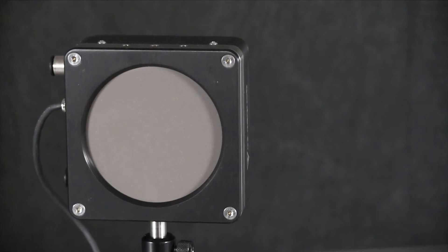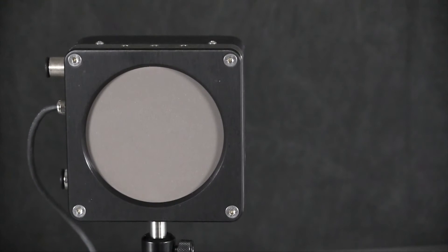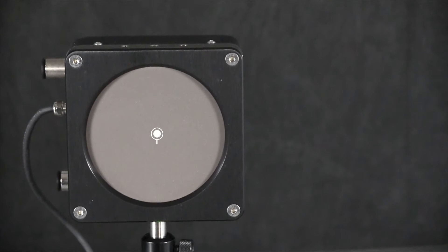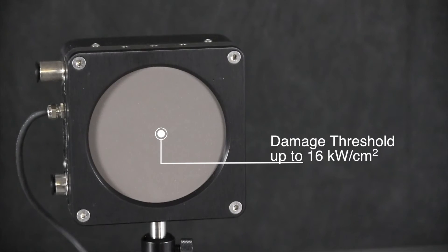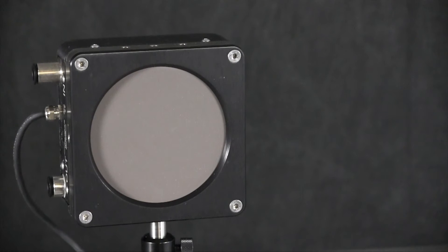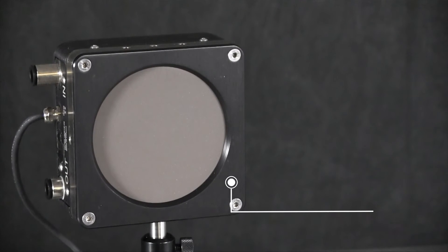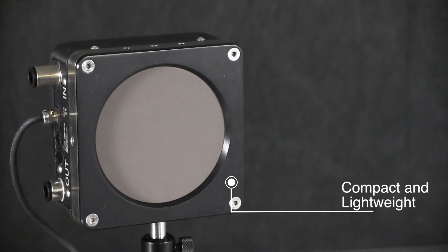Now let's take a close look at the typical features of our HP laser power probes. The front surface is a high absorbance coating with a damage threshold of up to 16kW per square centimeter. The overall package is compact and relatively lightweight.